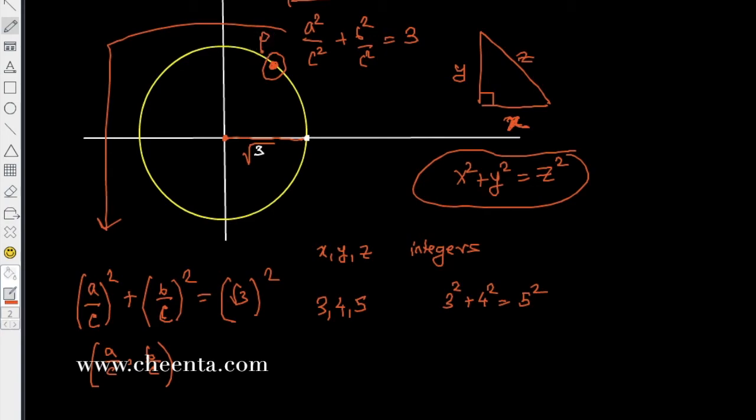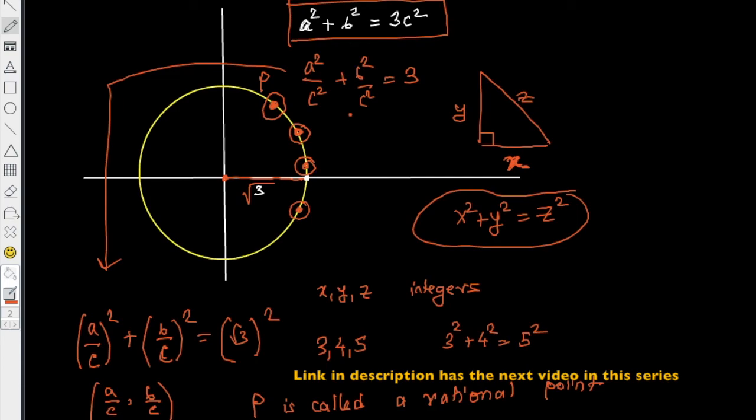In some sense we can call this point a rational point. P is called a rational point because both of its coordinates are rational numbers. So in one way, investigating rational points on the circumference of this circle is the same as investigating triplets of integers which satisfy this equation.